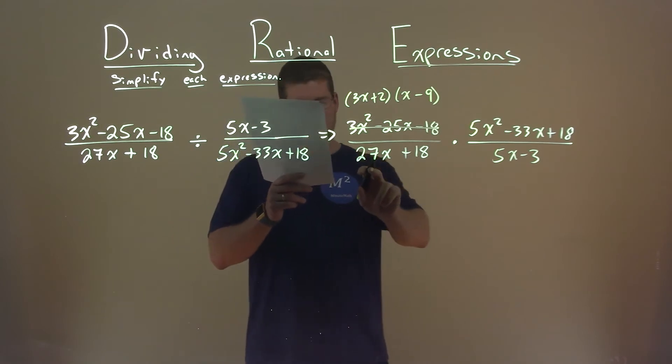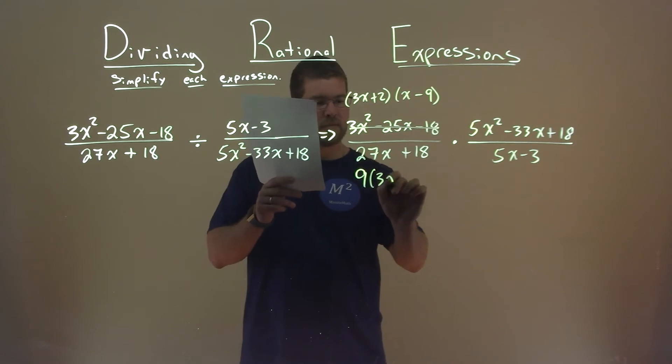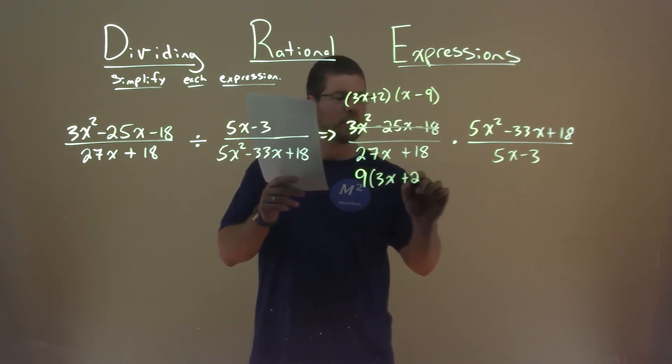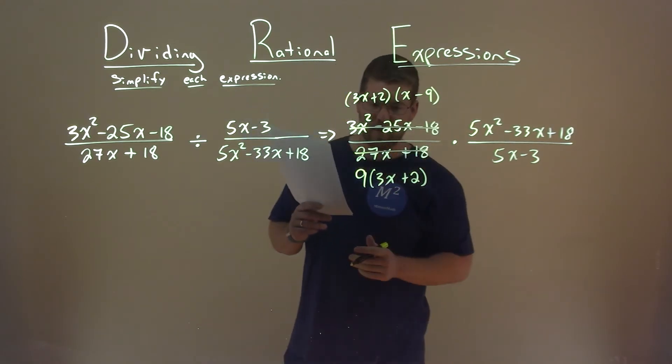Same thing down here, 27x plus 18. I can pull out a 9, and I'm left with 9 times 3x plus 2, and we're replacing that with our factored form.